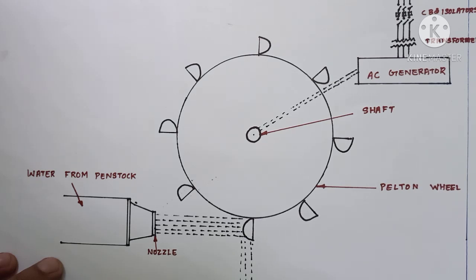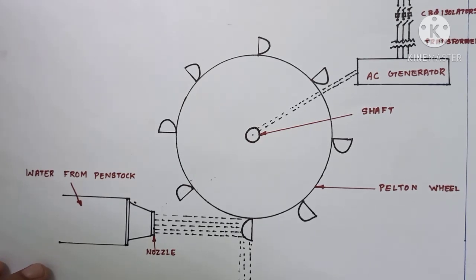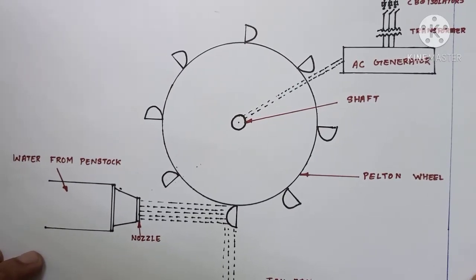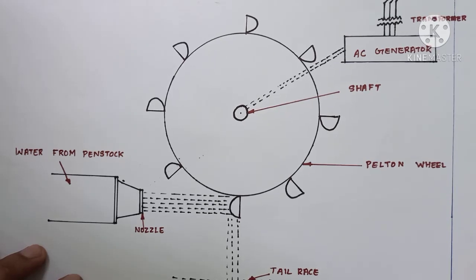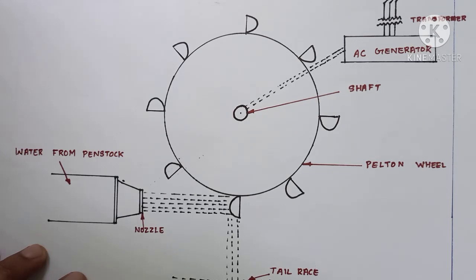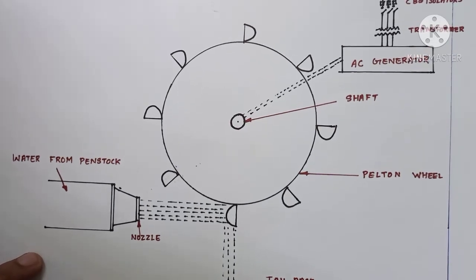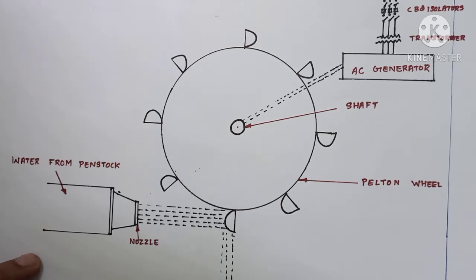Penstocks are made of very strong materials like steel or reinforced concrete. Here we can see a Pelton wheel turbine. Based on the action of water on the moving blade, turbines are classified into two categories: impulse turbines and reaction turbines. Impulse turbines include the Pelton wheel and are mainly used for high heads — almost above 200 meters. In Kerala, the largest hydroelectric power plant is the Moolamattom power plant in Idukki district, with an installed capacity of 780 megawatt and a speed of 375 RPM; due to the availability of high head, Pelton wheel turbines are installed there.